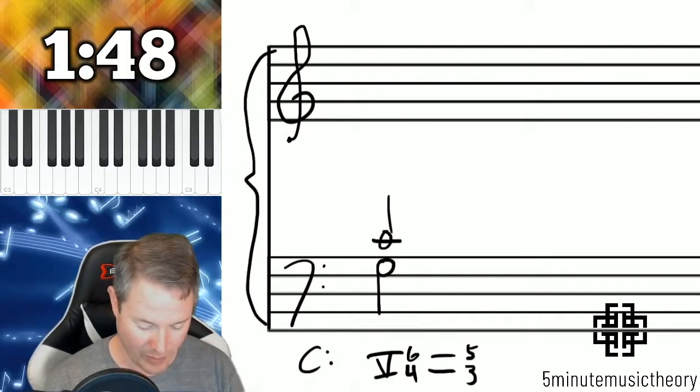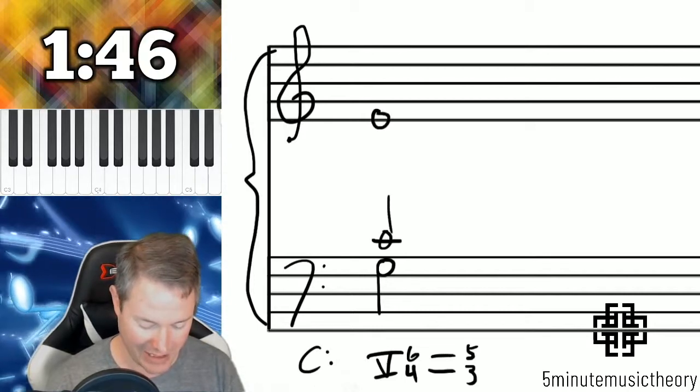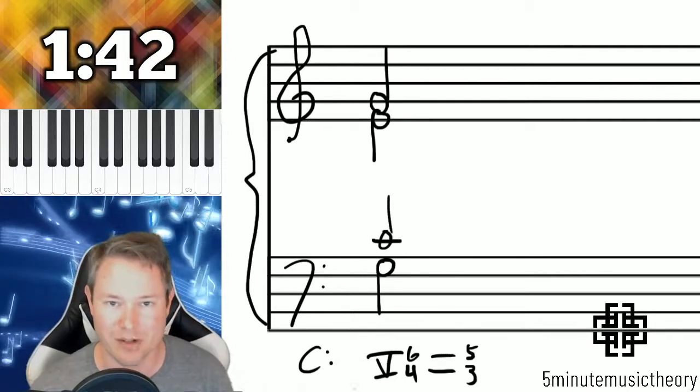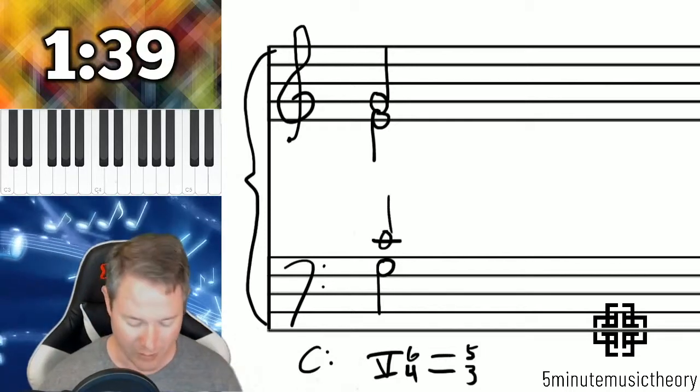And then I'll put let's do the E in the alto voice and then the G. Remember second inversion triads always have the fifth doubled.